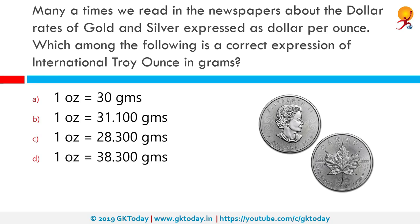We often read about dollar rates of gold and silver expressed as dollars per ounce. Which among the following is the correct expression of international troy ounce in grams? The correct answer is: one troy ounce equals 31.10 grams. A regular ounce is 28.35 grams, but a troy ounce is 31.10 grams. When it comes to gold weight, that extra 2 to 3 grams affects the size of the finished product.